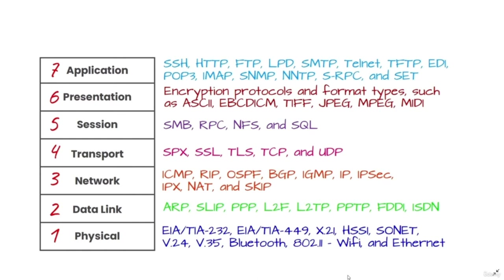The seventh layer is the application layer. At this layer, both the end user and the application layer interact directly with the software application. This layer sees network services provided to end user applications such as web browsers or Office 365. The application layer identifies communication partners, resource availability, and synchronizes communication.